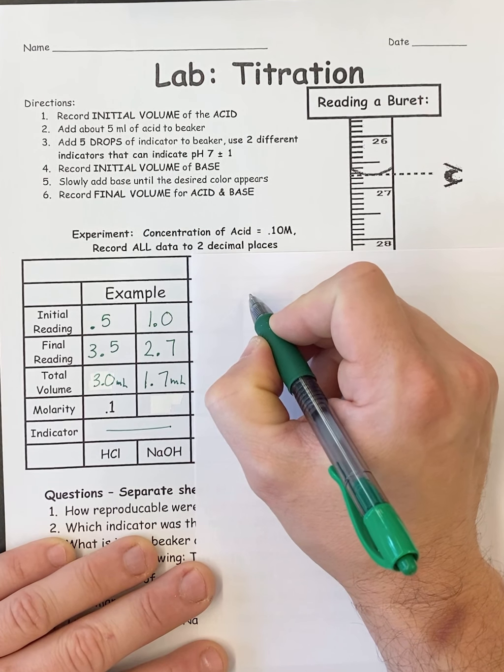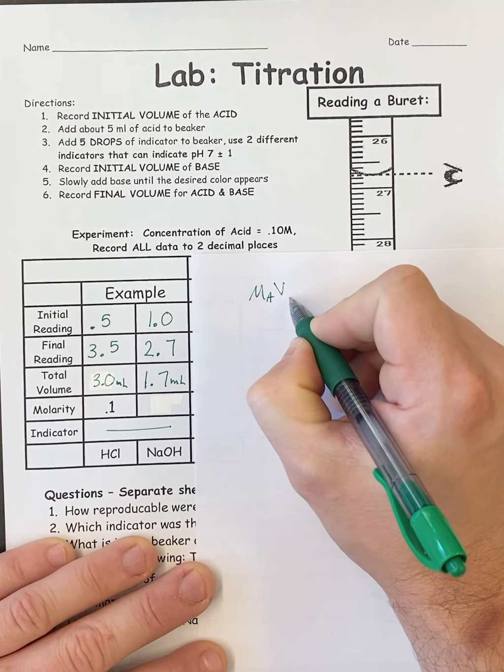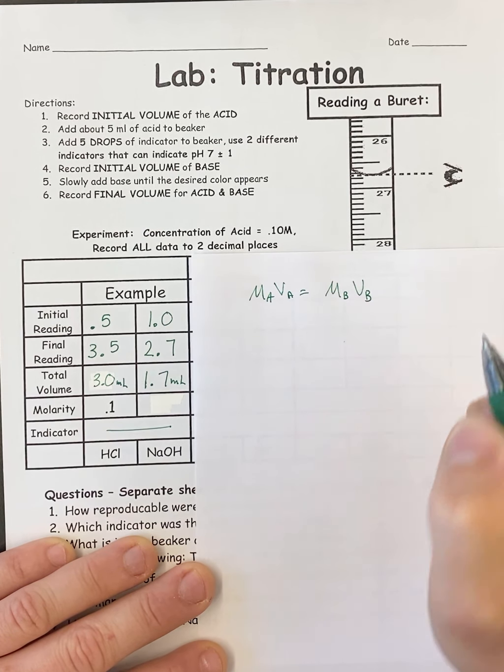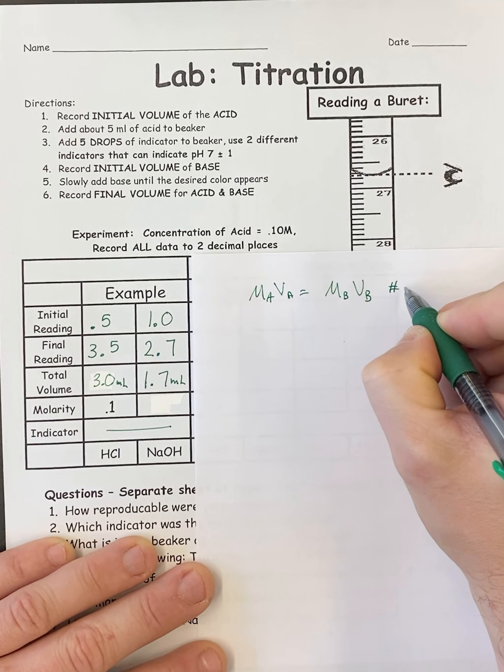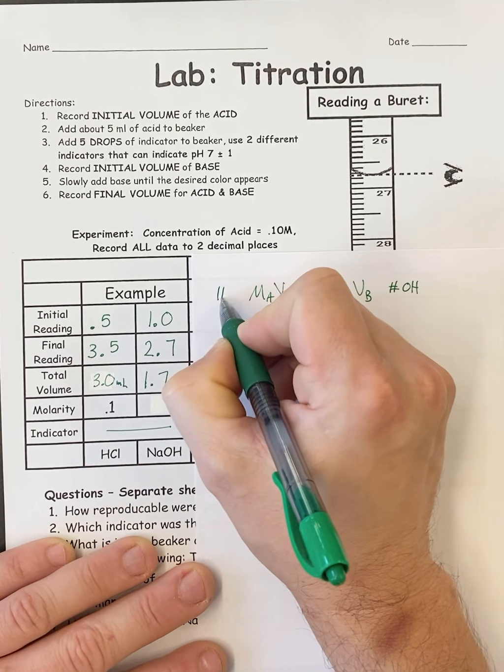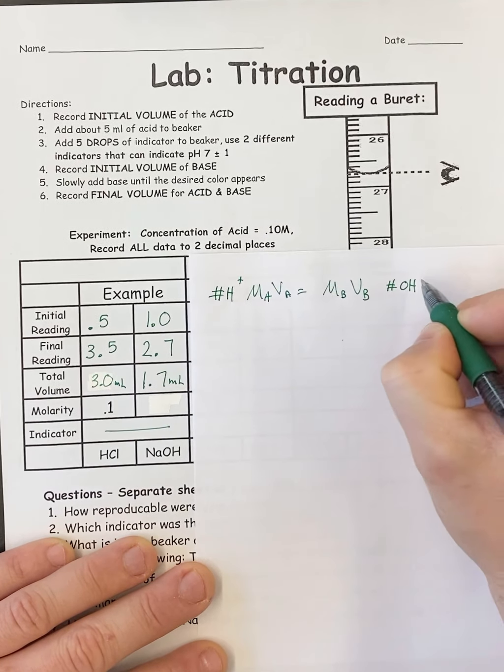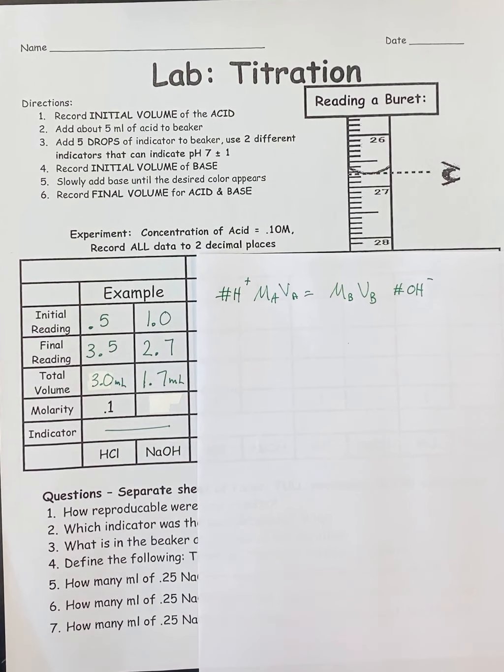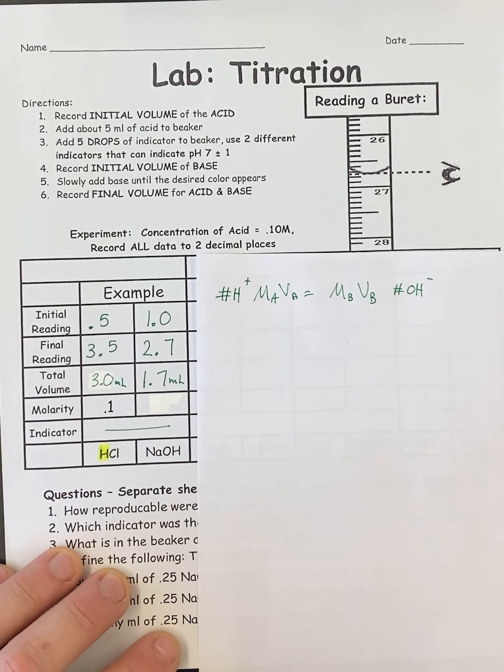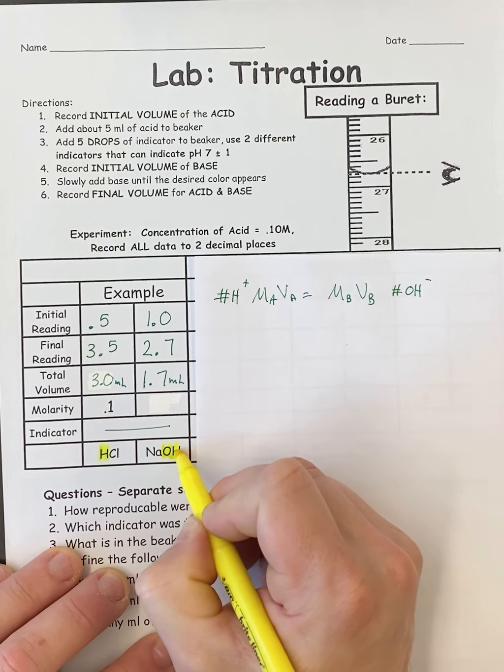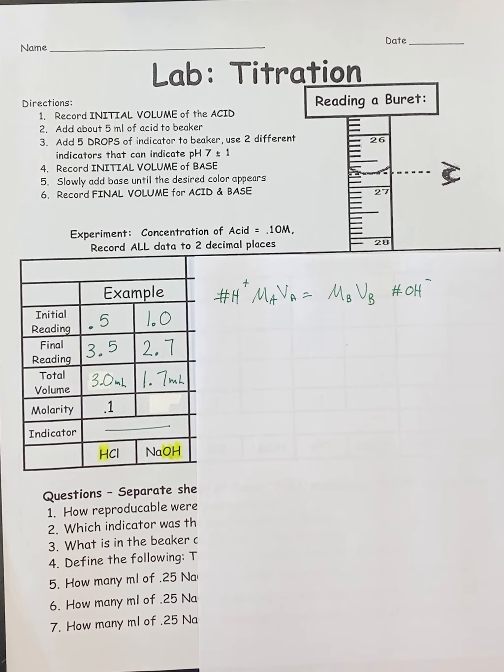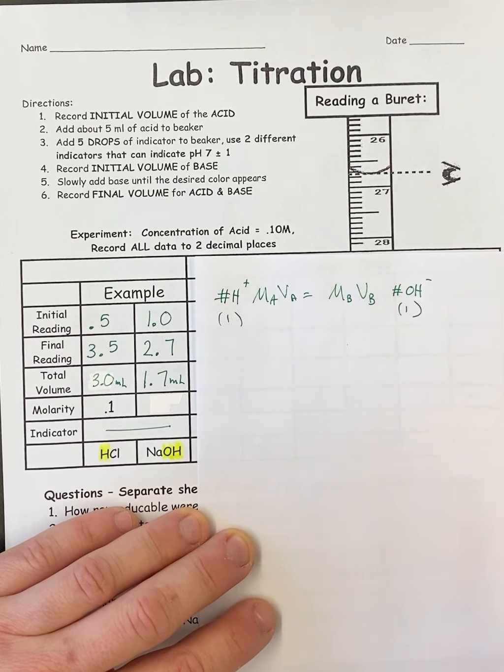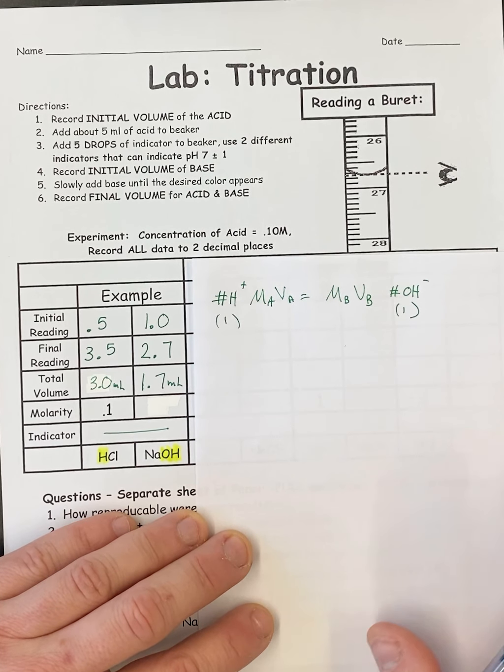So what I'm going to do is I'm going to use the titration formula. MAVA equals MBVB. Now the thing we have to worry about is the number of OHs and the number of Hs that could be given off by the acid and the base. In this case, HCl only has 1H, so it only gives off 1H, and NaOH only has 1OH, so it doesn't really matter. If we forgot to do this step, it would be fine because these numbers are both going to be 1.